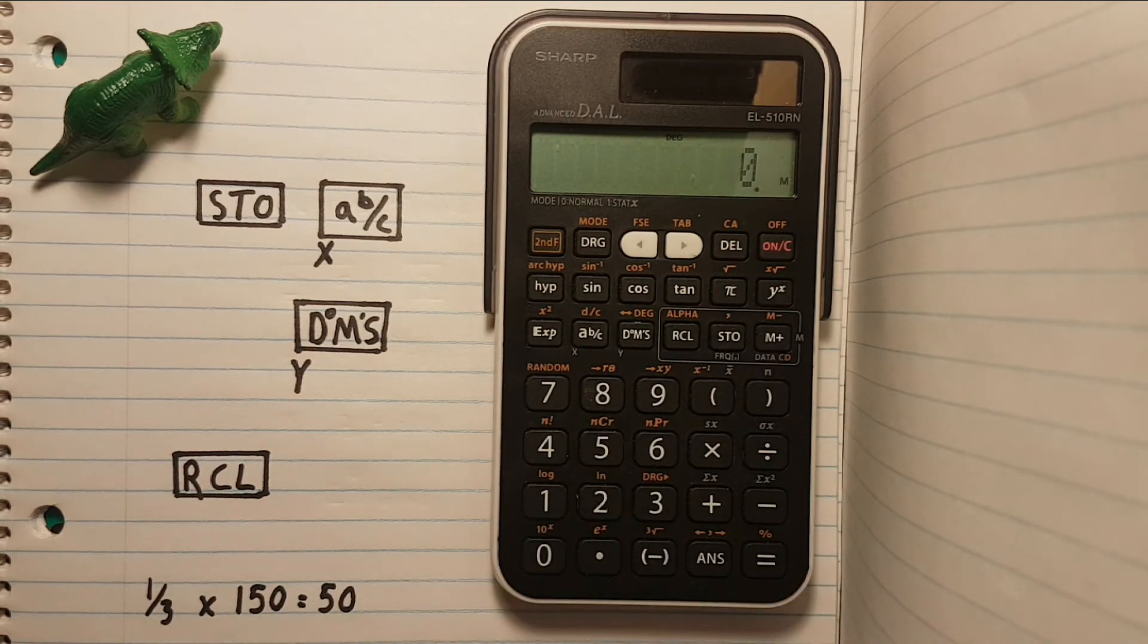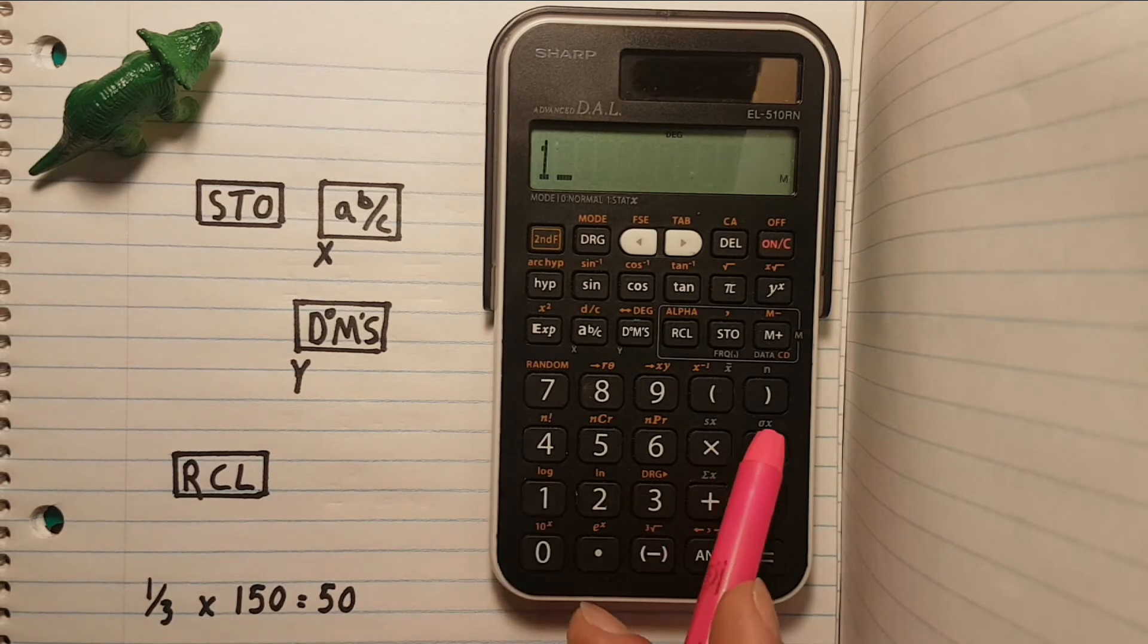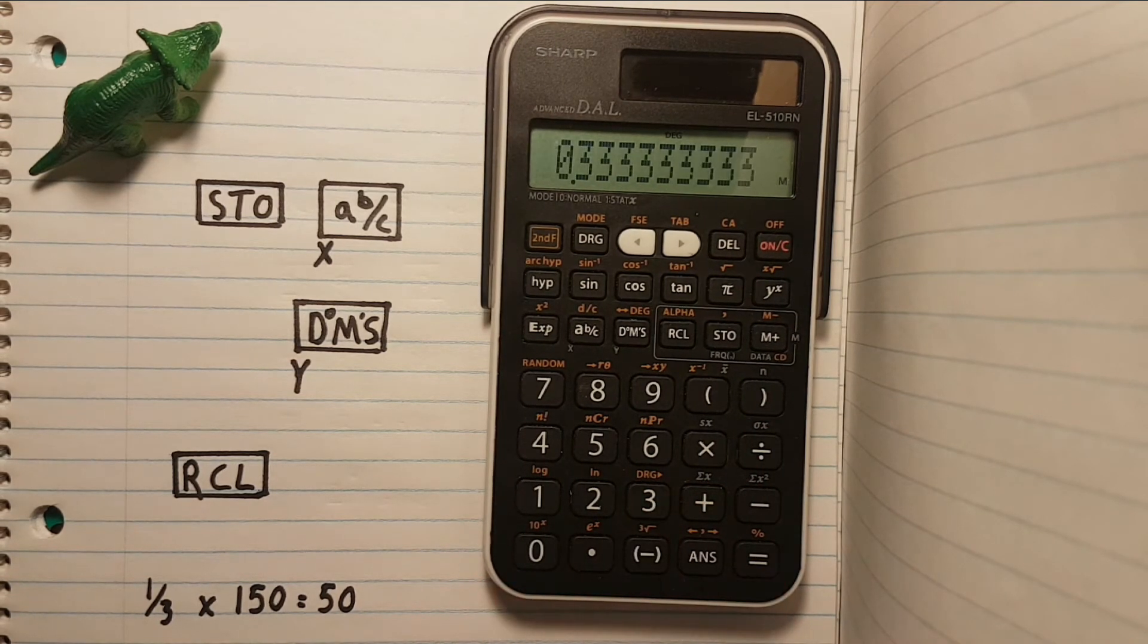Here's an example of how this can be useful. If we divide 1 divided by 3, we get 0.333 repeating, which is a lot of decimal numbers and something we don't want to write out every time we need to use it in a calculation.